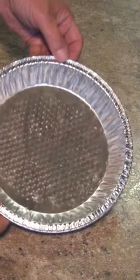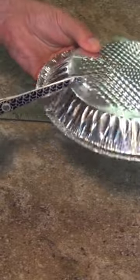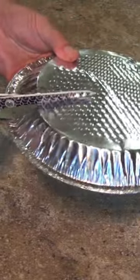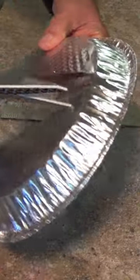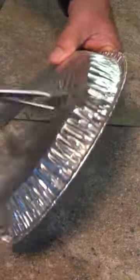Take an aluminum pie pan and using a good pair of scissors cut a one-half inch piece out like this. Careful, these edges are sharp. Leave about three-quarters of an inch still connected at the top.